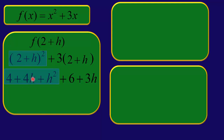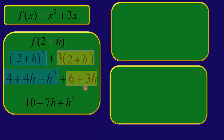So that's 2 plus h times 2 plus h — you would foil that out. And then over here we distribute through the 3 times the quantity. Then the last thing we do is add like terms: 6 and 4 is 10; add the h's and you get 7h; and then you have the h squared term. So the result is h squared plus 7h plus 10.